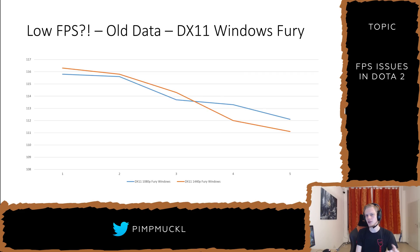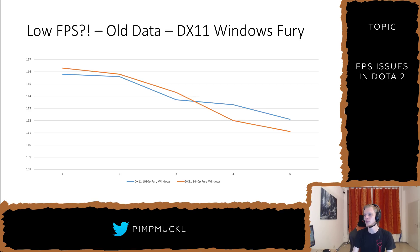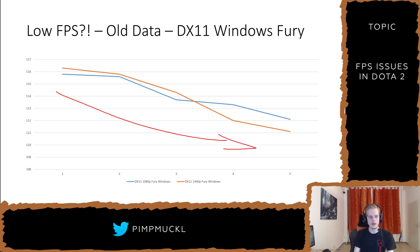So I went back to my old data. I made a video — maybe you remember that — about DirectX, OpenGL, Vulkan, Windows, Ubuntu, and whatever. And very clearly, there is a drop in performance. The more runs we do — one, two, three, four, five — the less FPS we got.